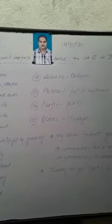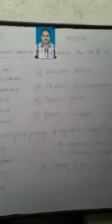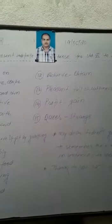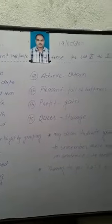Number 14: Profit means gain. Number 15: Queer means strange.